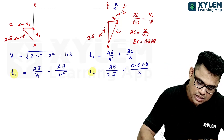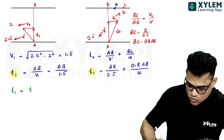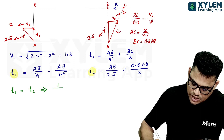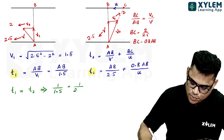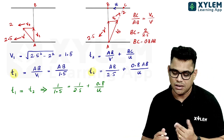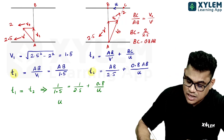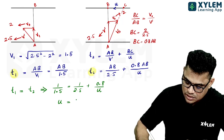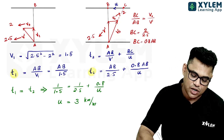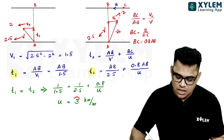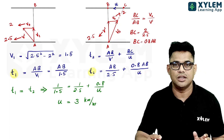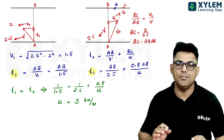Since it is given that T1 equals T2, we equate: AB divided by 1.5 equals AB divided by 2.5 plus 0.8 AB divided by U. After further algebraic calculation, we get U equal to 3 km per hour. Therefore the velocity with which the second swimmer walked from C to B is 3 km per hour, and both of them reach point B simultaneously.